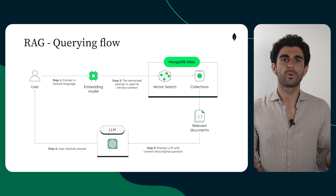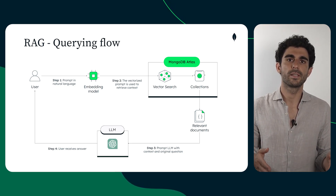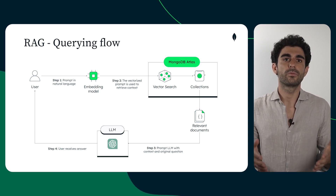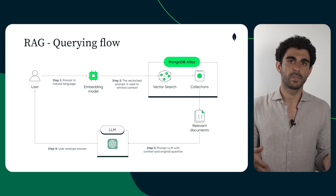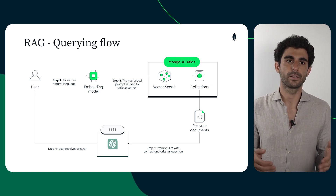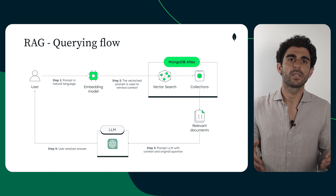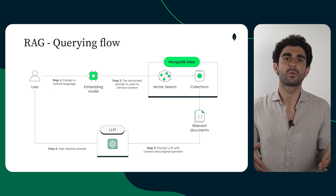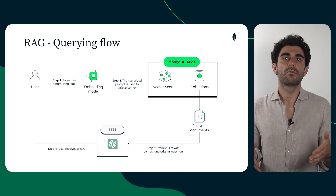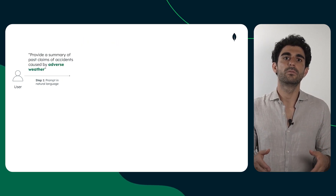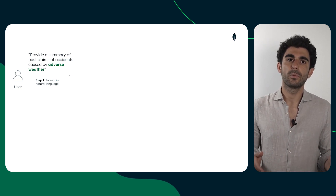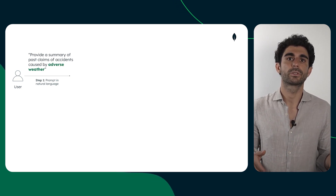Now let's dissect the process into its individual steps and see what actually happens in practice. The context, as in the previous video, revolves around claim adjustment, or specifically car accidents. The adjuster's task is to properly assess the damage incurred and determine the appropriate monetary compensation for the customer. This assessment involves comparing the current claim with past ones. In our example, the user is particularly interested in claims resulting from adverse weather conditions.